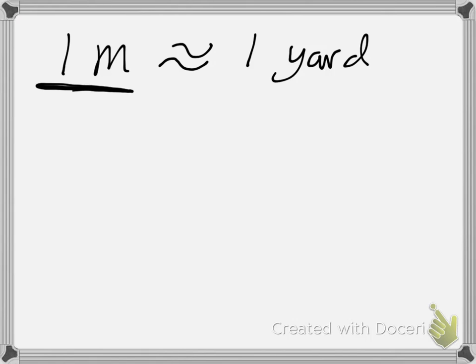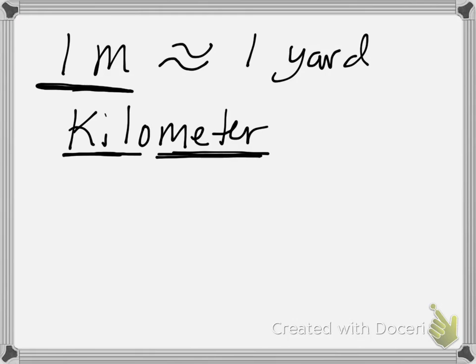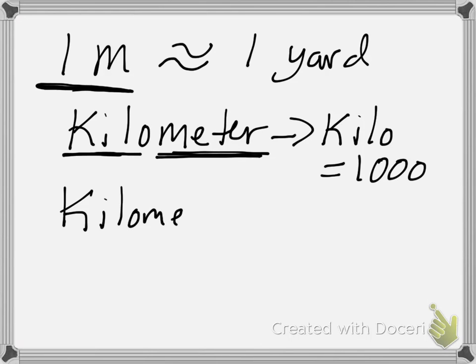So for instance, the long unit of distance in the metric system, the standard long unit of distance is the kilometer. So we have the word meter in there, so we know this is going to be a factor of a meter, and the term kilo equals 1,000. So a kilometer equals 1,000 meters.